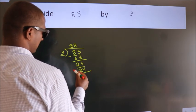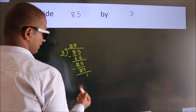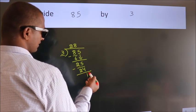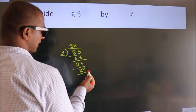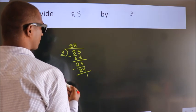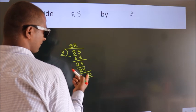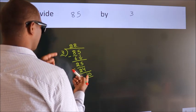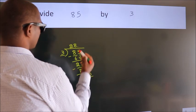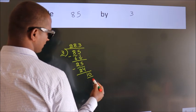Now we subtract and get 1. After this, there are no more numbers to bring down. So what we do is put a dot and take 0. So, 10. A number close to 10 in the 3 table is 3 times 3, which is 9.